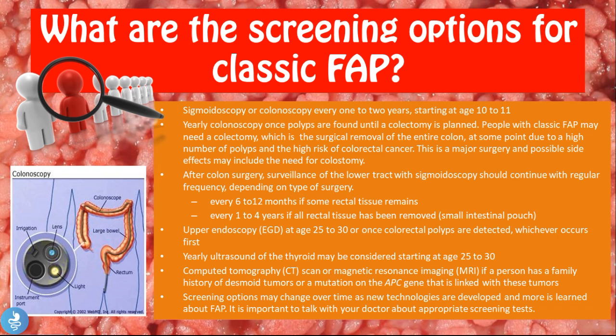After colon surgery, surveillance of the lower tract with a sigmoidoscope should continue at regular frequency: every 6 to 12 months if some rectal tissue remains, and every 1 to 4 years if all rectal tissue has been removed but a small intestinal pouch is present. An upper GI endoscopy is recommended at age 25 to 30, or once colorectal polyps are detected, whichever occurs first. Yearly thyroid ultrasound may also be considered starting at age 25 to 30.